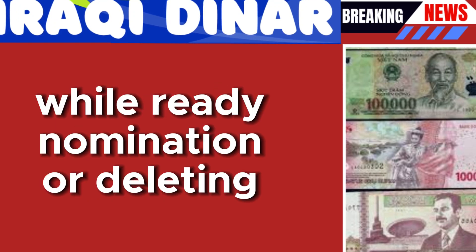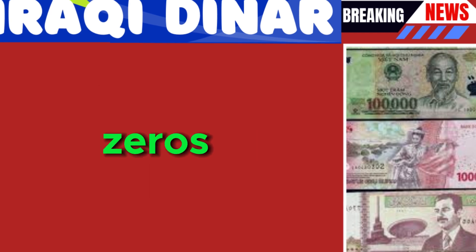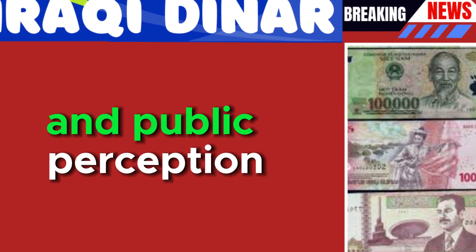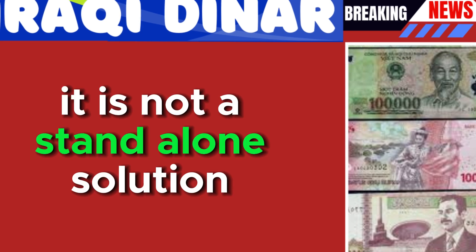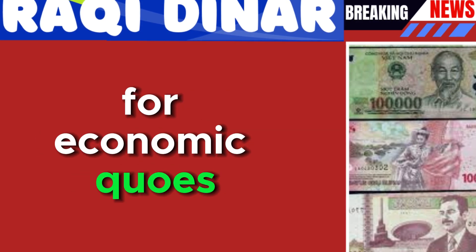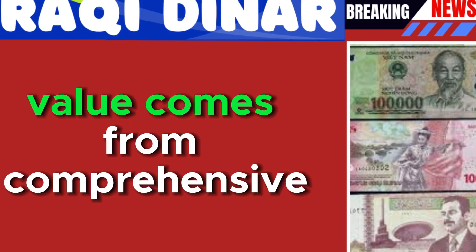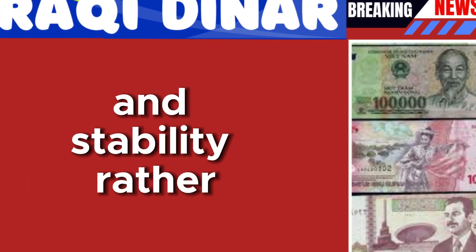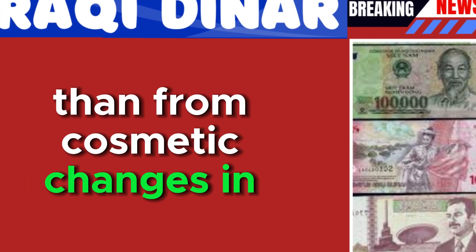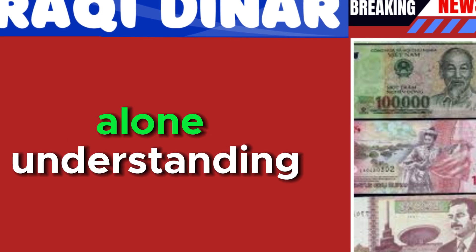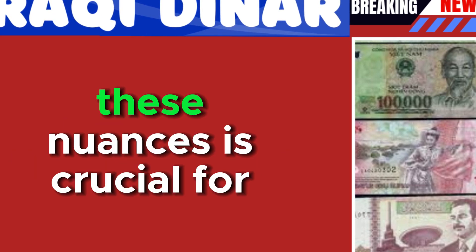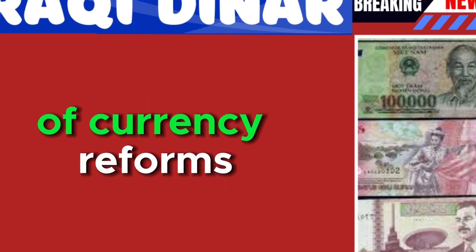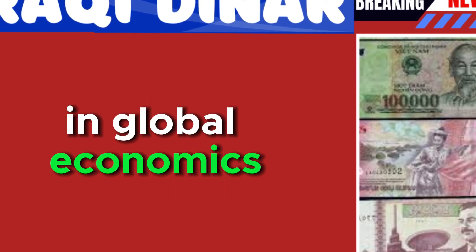In summary, while redenomination or deleting zeros can be a useful tool in managing currency stability and public perception, it is not a standalone solution for economic woes. Sustainable economic value comes from comprehensive economic policies and stability, rather than from cosmetic changes in currency denominations alone. Understanding these nuances is crucial for accurately assessing the implications of currency reforms in global economics.